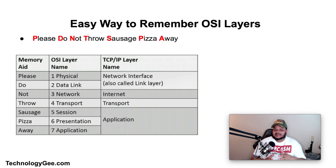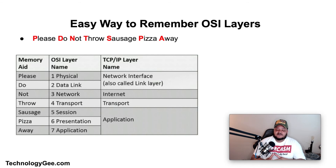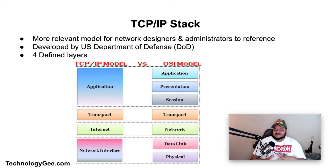An easy way to remember the OSI model layers is the phrase: 'Please Do Not Throw Sausage Pizza Away.' This begins at layer one and goes all the way up through layer seven, and is the easiest way to remember the layers in the correct order of the OSI model.